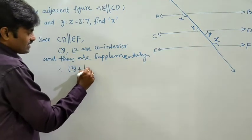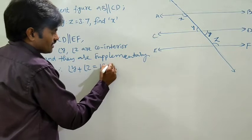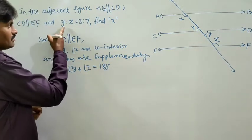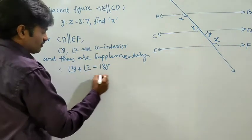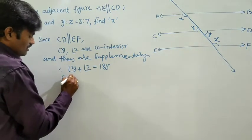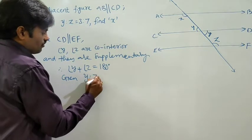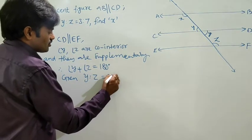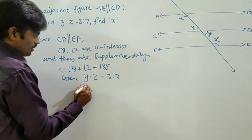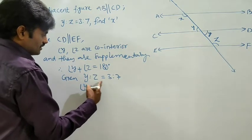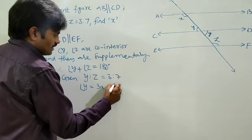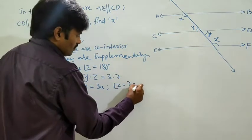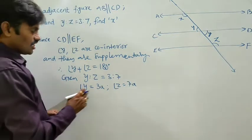Therefore, angle Y plus angle Z is equal to 180 degrees. But here, the ratio of Y to Z is given. Since the ratio of angle Y and angle Z is 3 is to 7, then if we take separately, angle Y is equal to 3A and angle Z is equal to 7A, where 3 to 7 is the ratio.